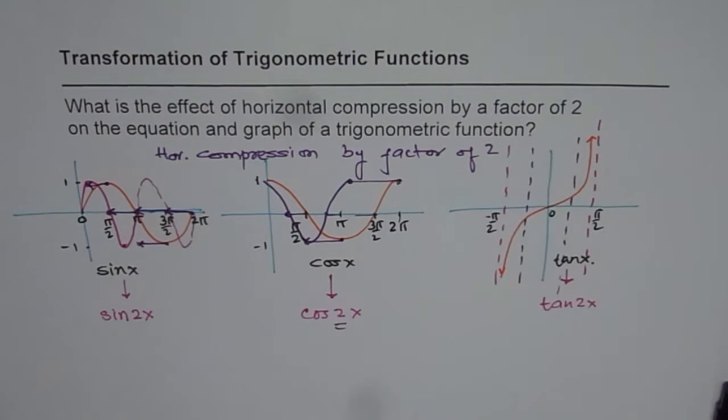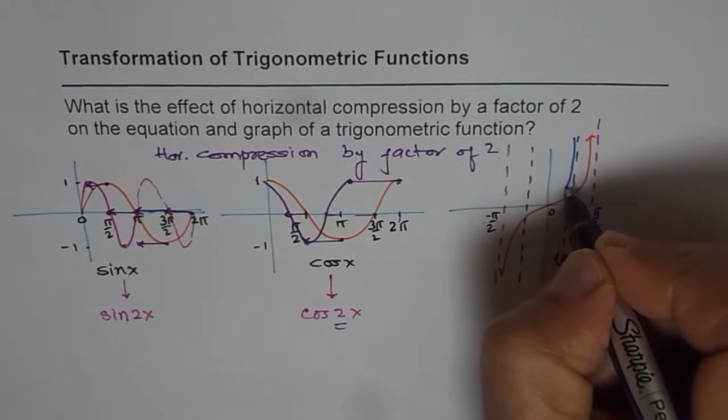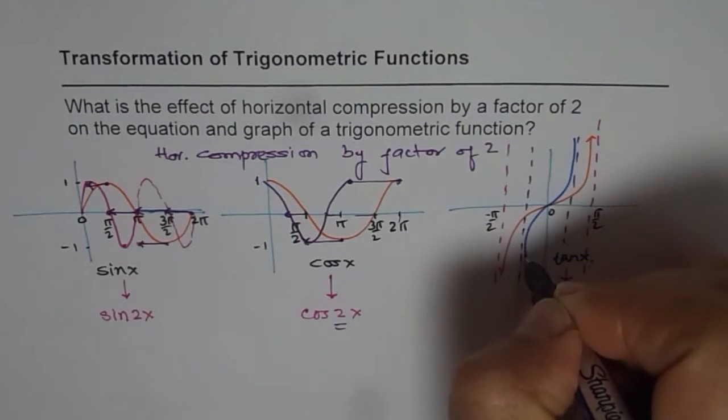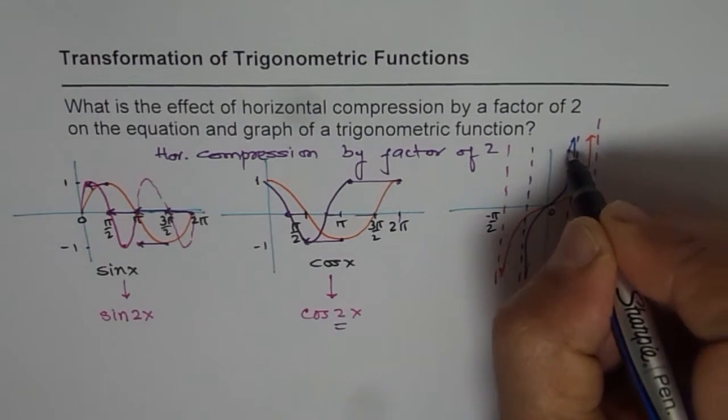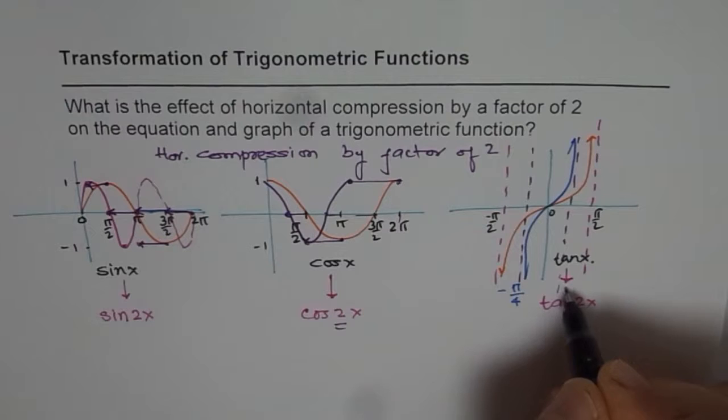And therefore, the graph of the function, let me draw in a different ink, will be kind of like this. So these points will be minus pi by 4 and plus pi by 4.